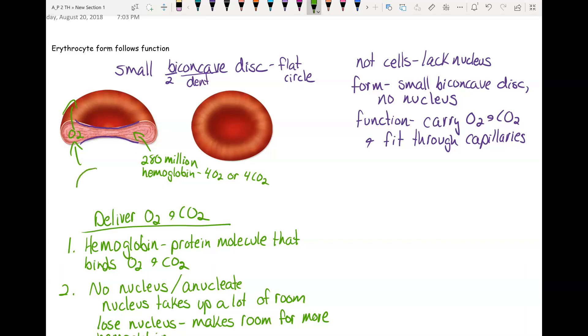Imagine instead if you had a sphere, you had a cell that was like a basketball. The oxygen would have further to go to get in or out. By having this thin flat cell, the oxygen doesn't have very far to get to a surface. There's always a surface to get in and out through nearby.